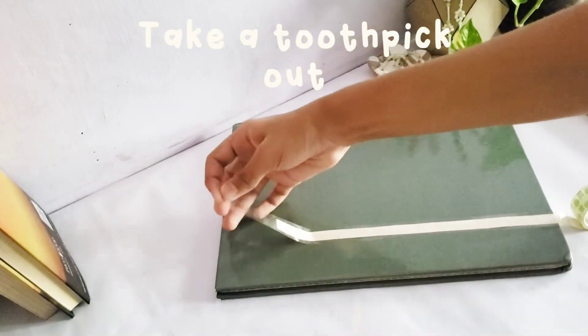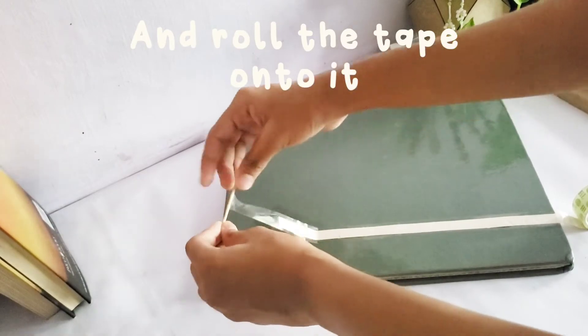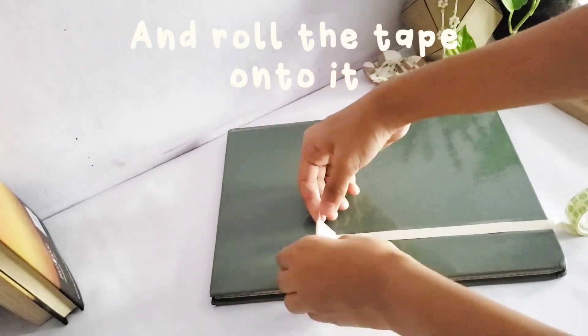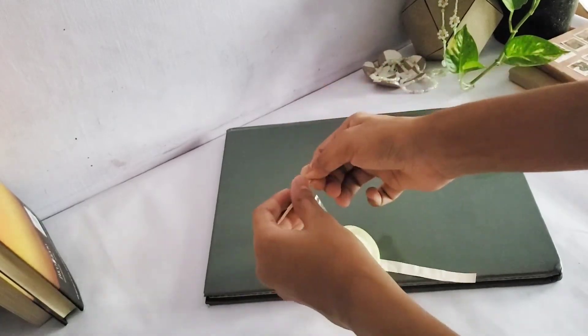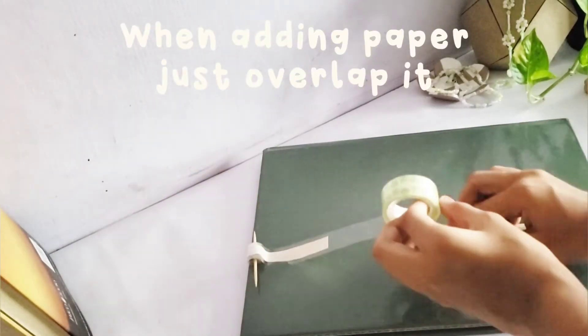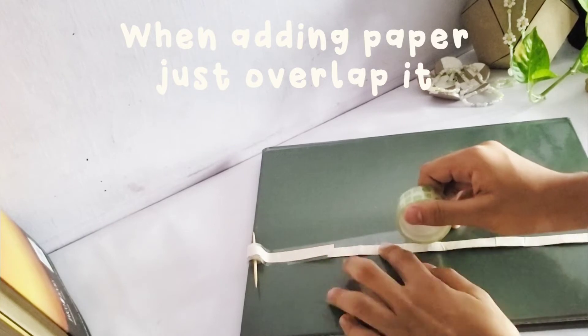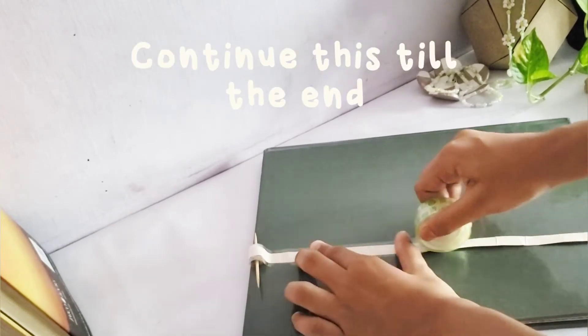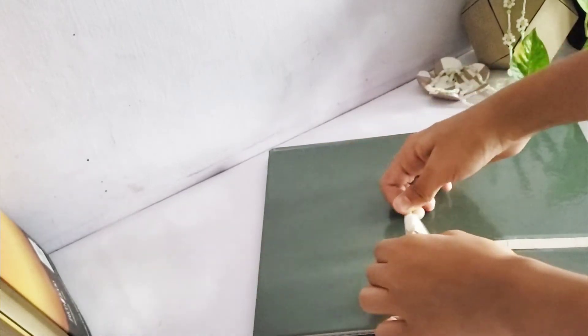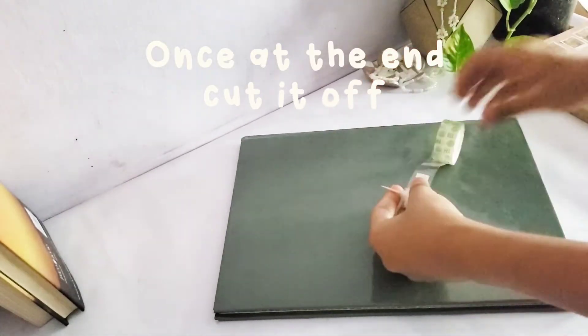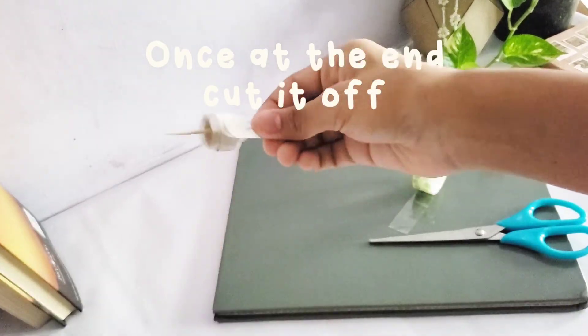Take out the toothpick that supports the roller and roll the tape onto the toothpick, preferably in the middle. To attach more paper, just add it under the first paper and just keep on adding more tape. Once you've added your desired amount of paper, cut the end off.